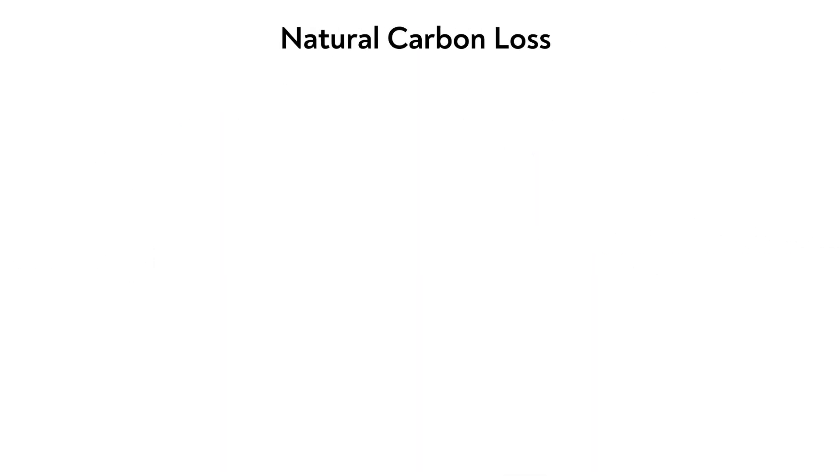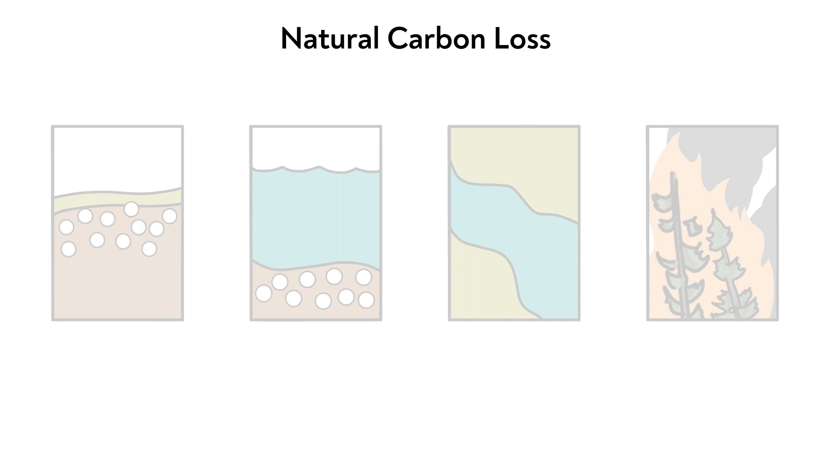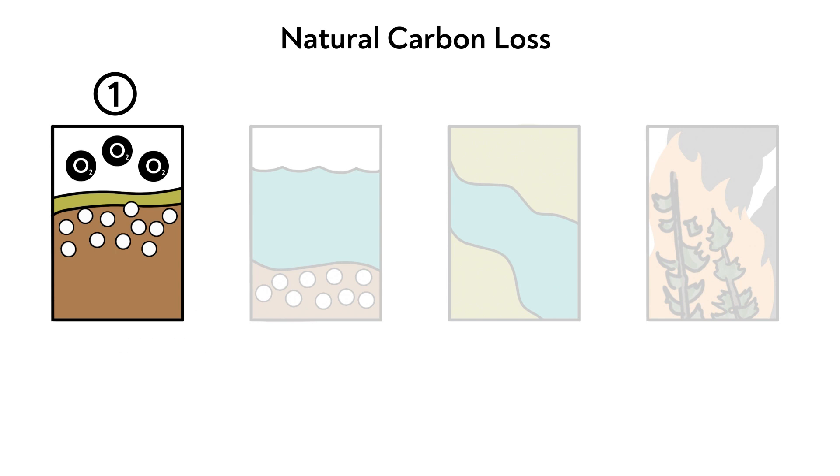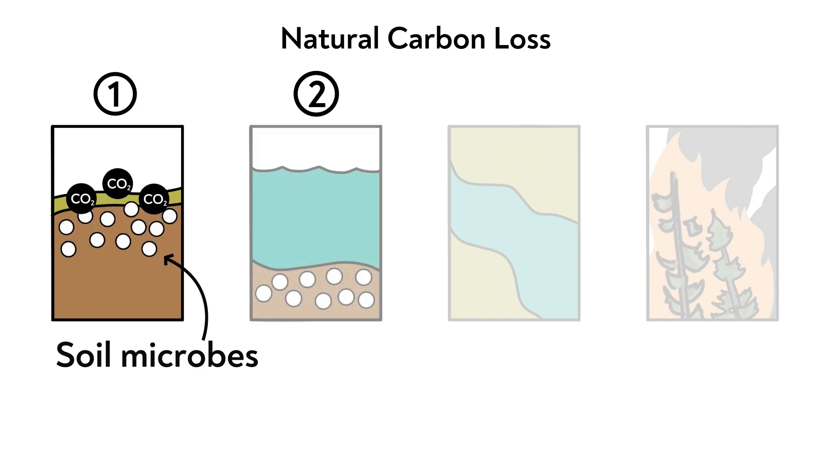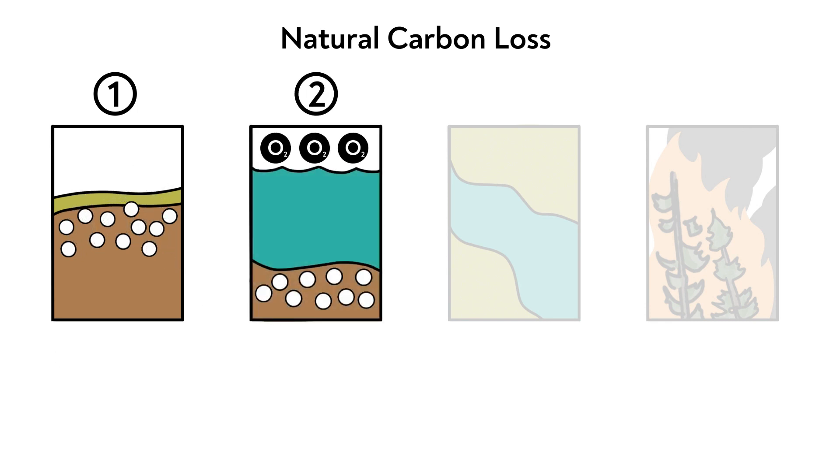Carbon can also be naturally lost from wetlands in several ways. First, carbon can be lost to the atmosphere. This happens in two different ways. When soils are not waterlogged and oxygen is available, tiny soil microbes use the oxygen to breathe and then exhale that carbon dioxide into the atmosphere. When soils are waterlogged and oxygen is less available, soil microbes produce methane that is emitted into the atmosphere.